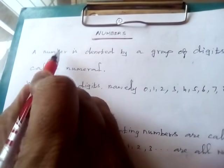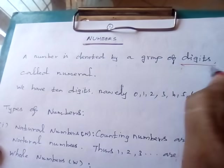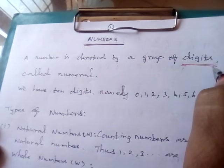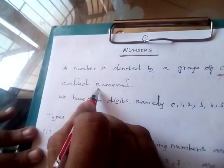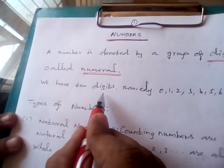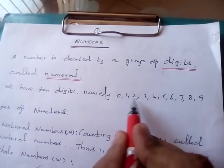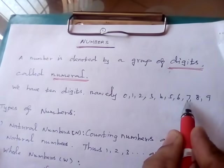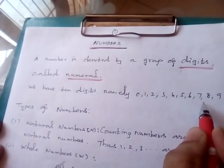A number is denoted by a group of digits called numeral. We have 10 digits, namely 0, 1, 2, 3, 4, 5, 6, 7, 8 and 9. These are the digits.